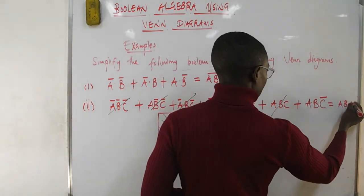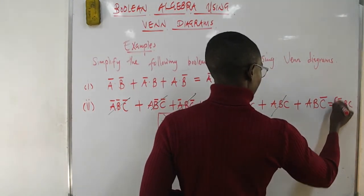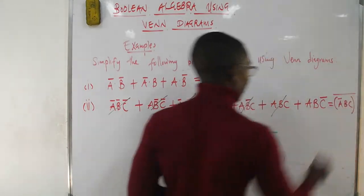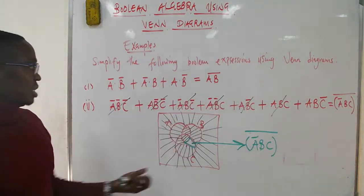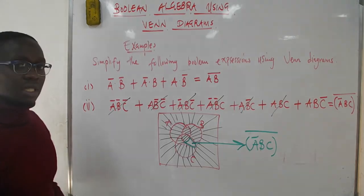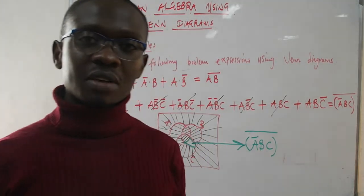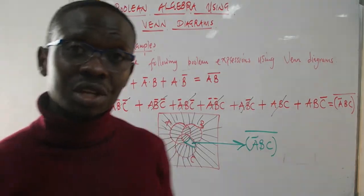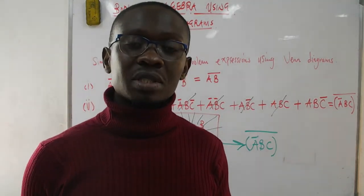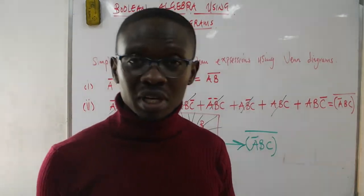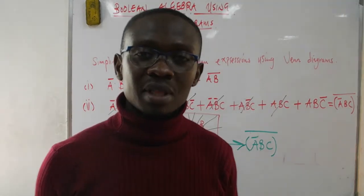This simplifies to (A̅BC)̅. This marks the end of Boolean expressions using Venn diagrams. In the next lecture, we'll introduce Karnaugh maps for simplifying Boolean expressions. Thank you.